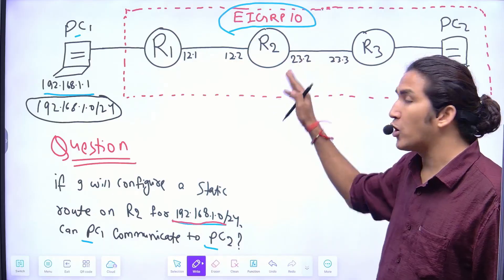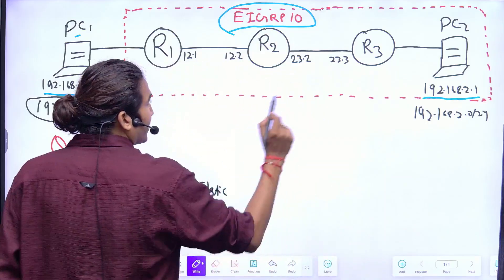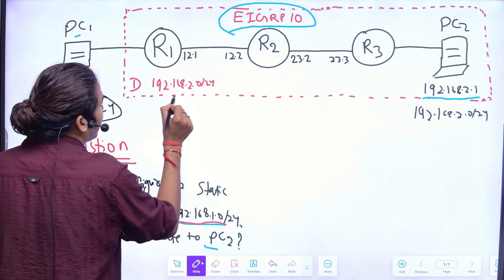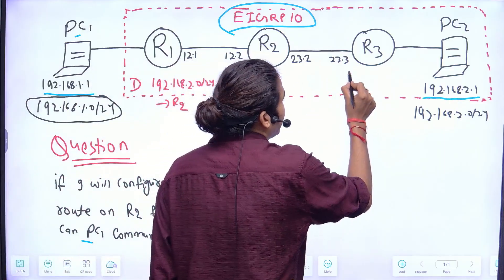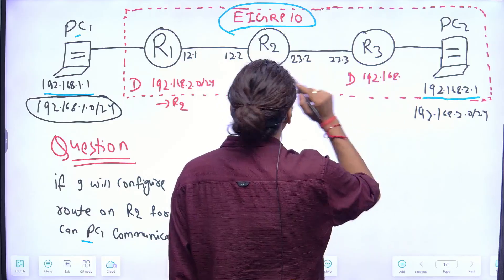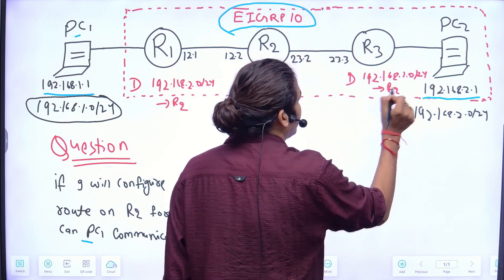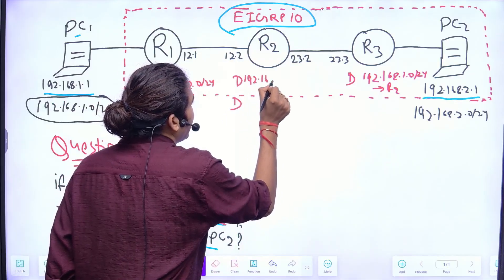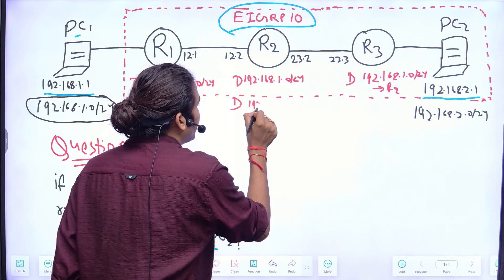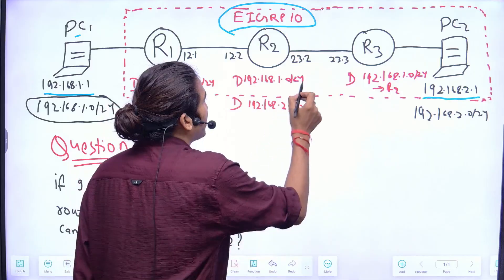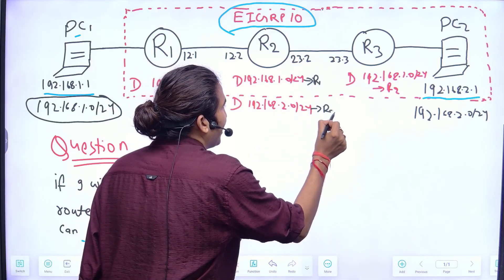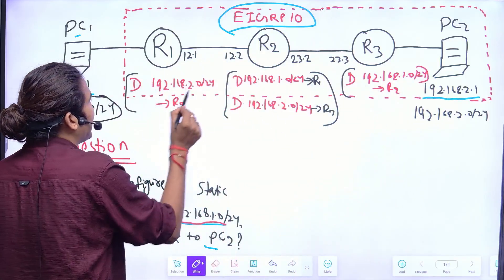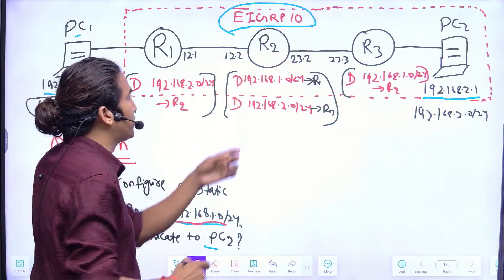Right now all routers have routes through EIGRP. Router 1 learns the destination network 192.168.2.0/24 via R2 as the gateway. R3 also learns 192.168.1.0/24 reachable via R2. Router 2 has two EIGRP routes: 192.168.1.0/24 reachable via R1 and 192.168.2.0/24 reachable via R3. That is the current EIGRP routing table for all three routers.